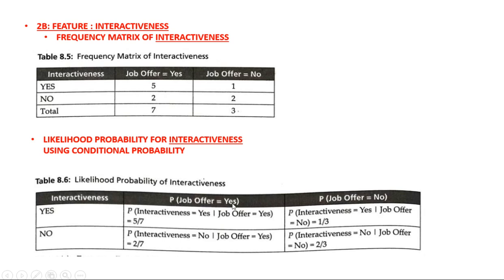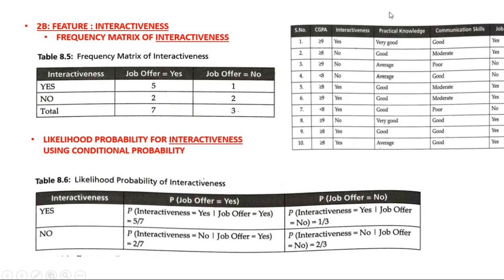For interactiveness, compute the probability of job offer yes and job offer no. The likelihood probability here is: probability of interactiveness = yes given job offer = yes, and probability of interactiveness = yes given job offer = no. Similarly, do for the second row. Looking at the input dataset, fill up both the frequency matrix table and the likelihood probability table.